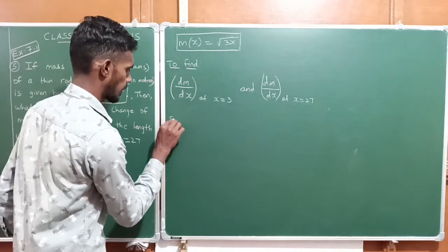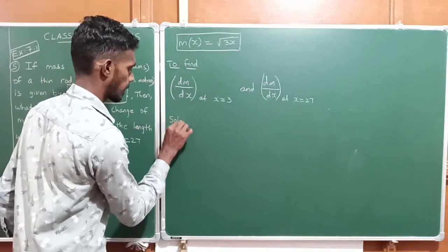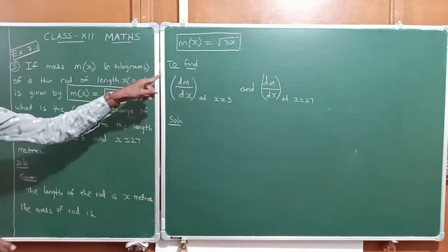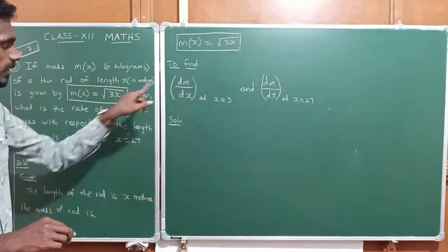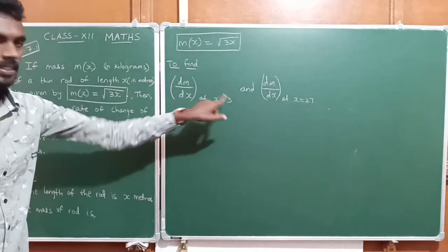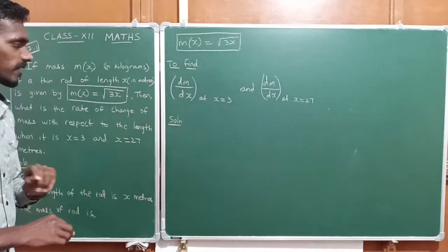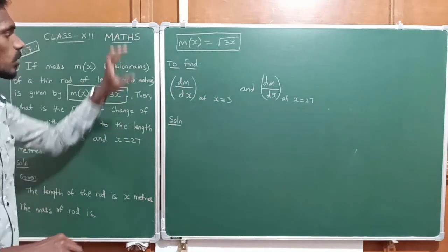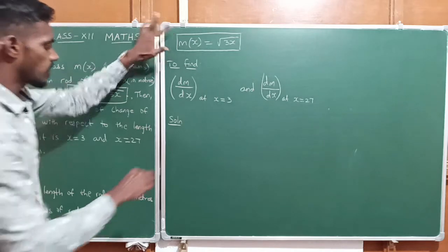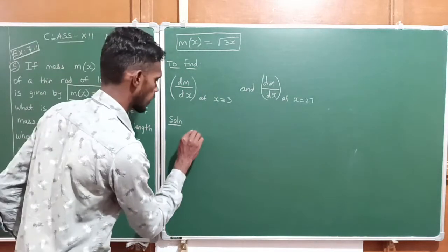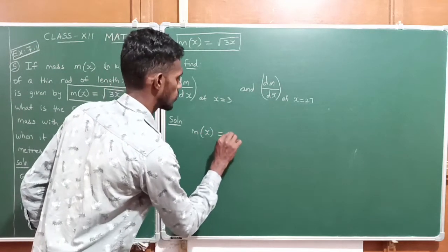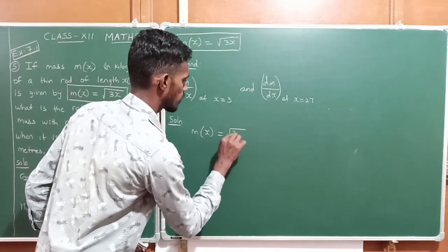Solution: First, find dm/dx, then substitute the x value 3 into the function. First find dm/dx from the given m(x) function. So the first m(x) function is m(x) = √(3x).